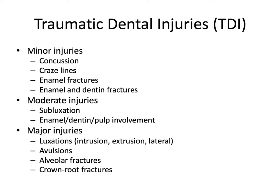Then we have our major injuries, which are our luxations — intrusion, extrusion, and lateral luxation — avulsions, alveolar fractures, and crown and root fractures. These are our Ellis class 5 and class 6 fractures. They involve a high cost, major multi-specialty interventions, have a reduced or poor prognosis, and require a long-term follow-up.